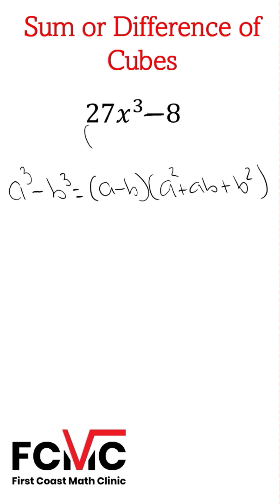Let's find our a and b values. What are we cubing to get 27x to the third? That's going to be 3x. That's our a value. What are we cubing to get 8? That's going to be 2. That's our b value.